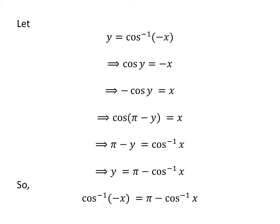We had assumed y equals arccos of minus x. So, arccos of minus x equals pi minus arccos of x. The identity is proved.